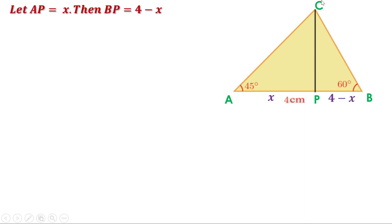Now look at triangle APC. The angle at A is 45 degrees, and since CP is a perpendicular, angle P is 90 degrees, therefore the angle at C is also 45 degrees. So it is a 45-45-90 triangle with side ratio 1:1:√2. Here AP is X centimeters, therefore PC is also X centimeters and AC is √2X centimeters.